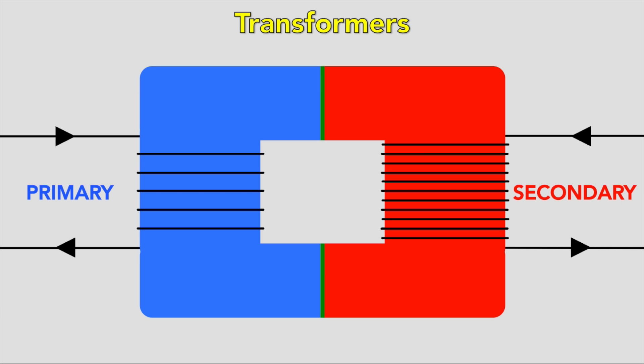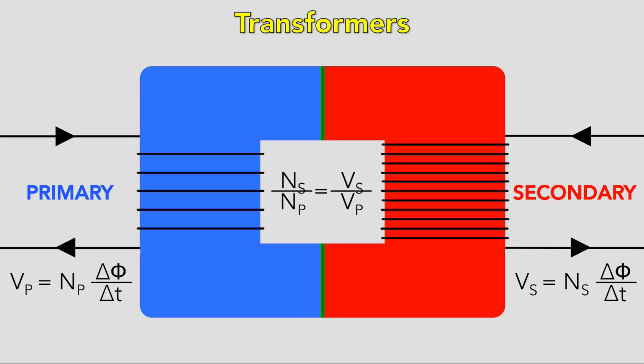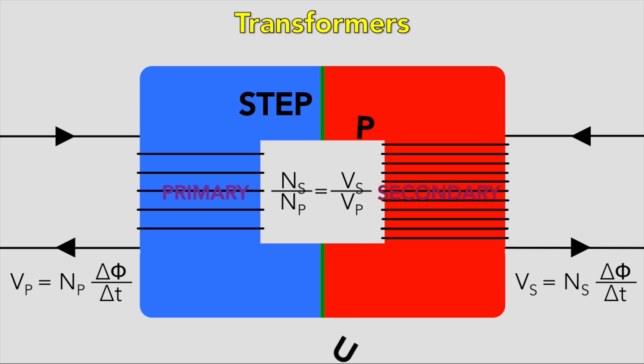From Faraday's law, Vp = Np × (ΔΦ/Δt), and Vs = Ns × (ΔΦ/Δt). Combining these gives Ns/Np = Vs/Vp, so it's all to do with ratio. Step-up transformers increase the voltage by having more turns on the secondary coil. Step-down transformers do the opposite.